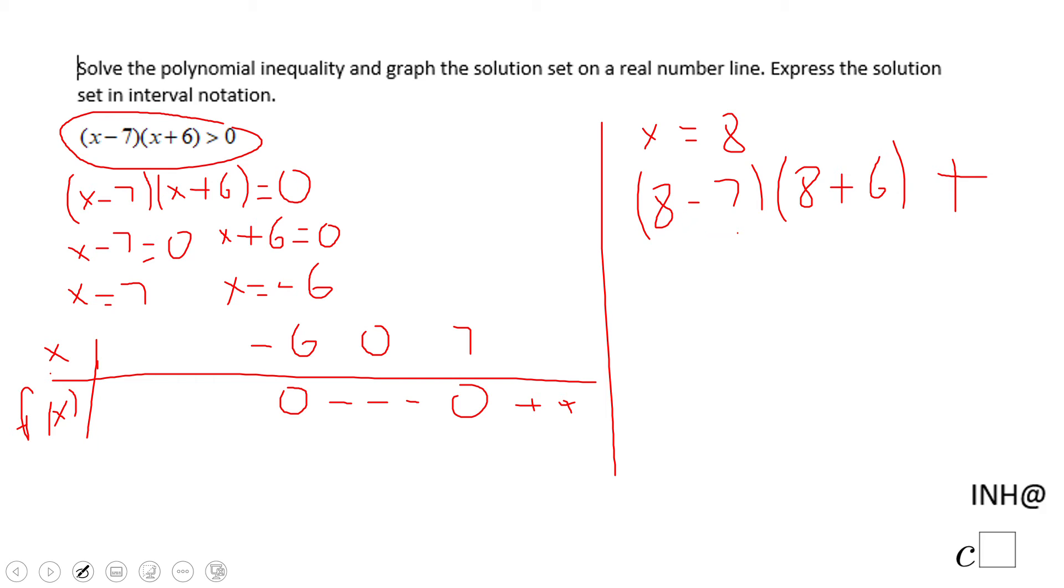Similarly, I can get another value, x equals negative seven. Negative seven minus seven, which is a negative number. Negative seven plus six, another negative number. If you multiply two negative numbers, you get a positive number.